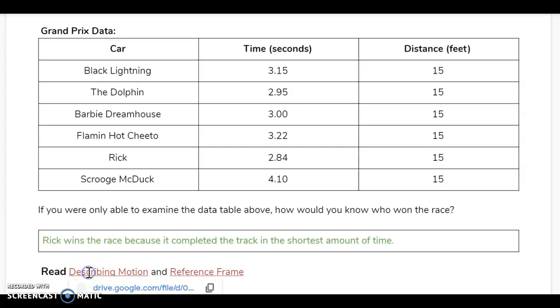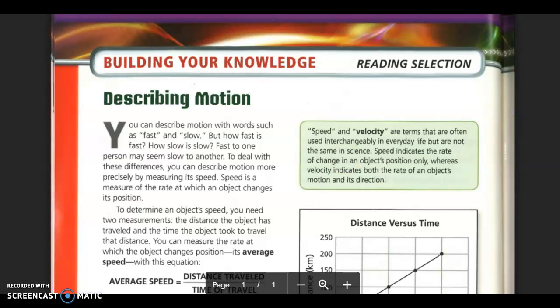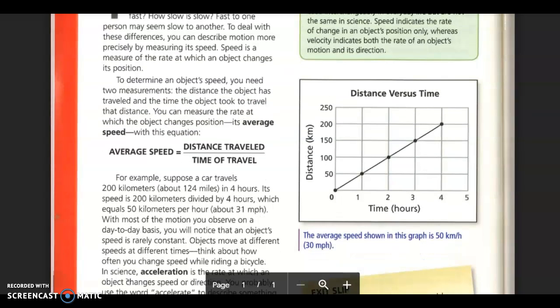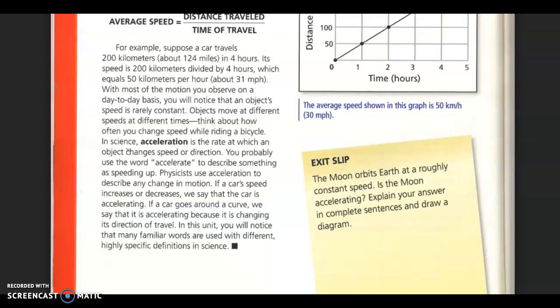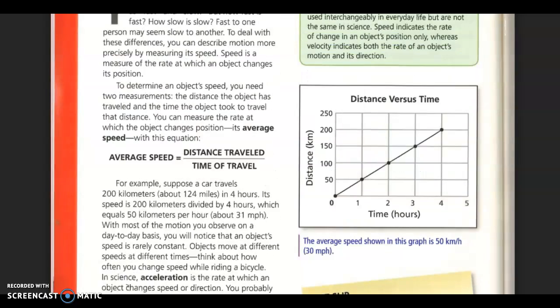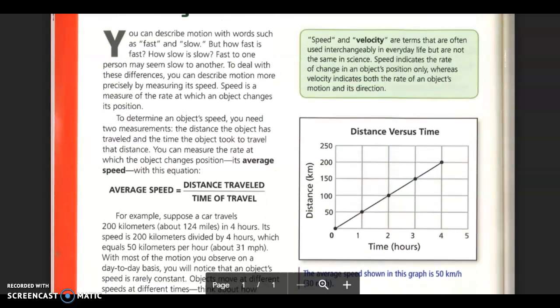From here you should have read describing motion and reference frame. In describing motion there were a few key terms that you should have noted. You should have noted average speed, which we use an equation: average speed equals distance traveled divided by time of travel to solve. So to find speed, you divide distance and time. You also should have noted the term acceleration, which is the rate at which an object changes speed or direction. Finally, you should have noted the term velocity, which is speed but with a direction added to it. If you didn't read this, it is very important for you to go back and read or listen to this page.